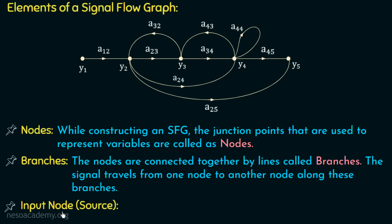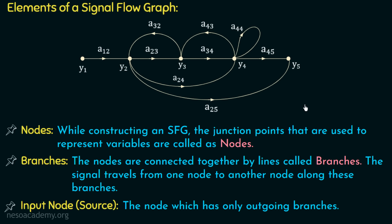Moving on to the next element: the input node or source. The node which has only outgoing branches is called the input node. If we observe node Y1, it only has one outgoing branch — a branch in which the signal travels out of the node. Node Y2 has both outgoing and incoming branches. Similarly, nodes Y3, Y4, and Y5 have incoming branches. But only node Y1 has only outgoing branches and no incoming branch, so Y1 is the input node.